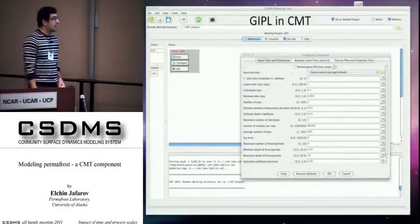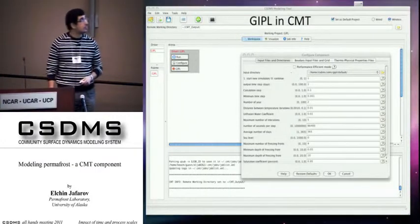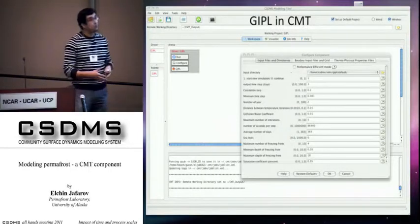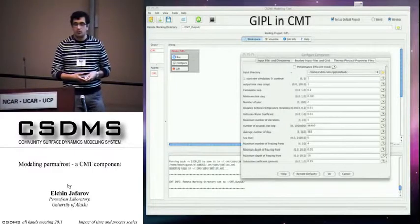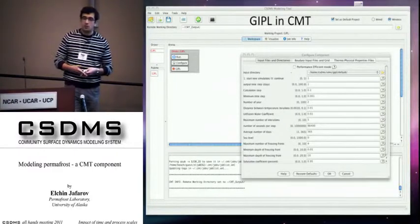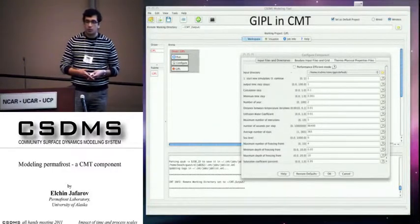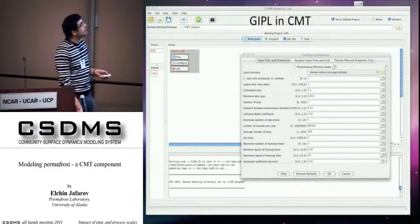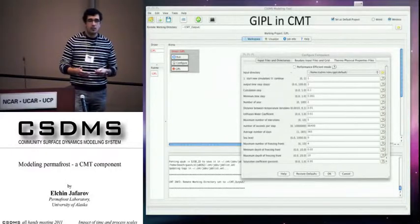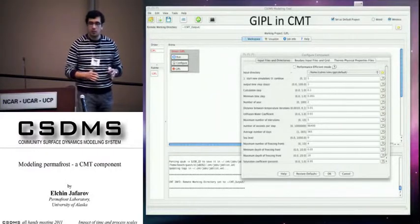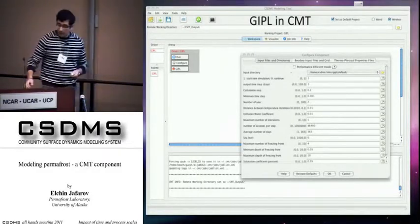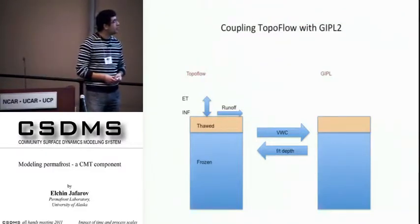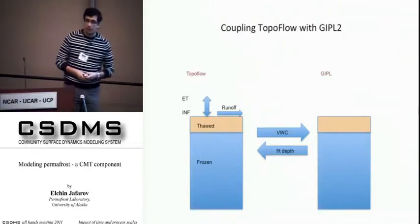I was visiting CSDMS for two weeks at the end of summer. The idea was to incorporate the GIPL model into the CMT environment. We were able to do that on the first day, which was quite surprising, but mostly because I did my homework before. I rewrote the model so that it satisfied the IRF format. My feeling is that as long as your model satisfies that format, it's quite easy to make it CMT. The ultimate goal, of course, is to couple that with a hydrological model, and I hope that with good funding and enough desire that can be done.